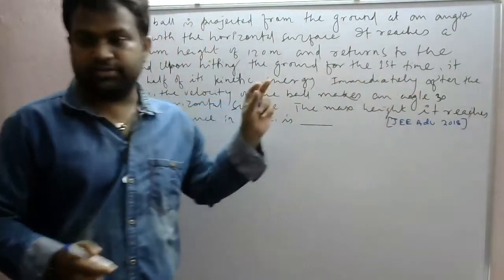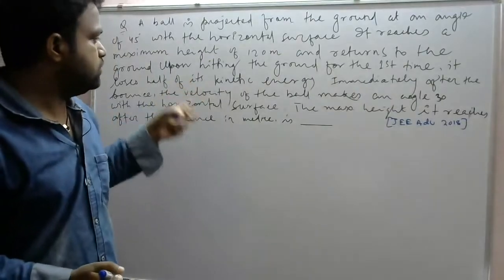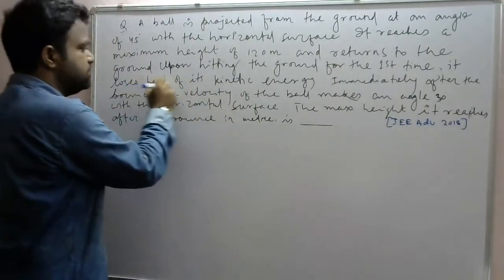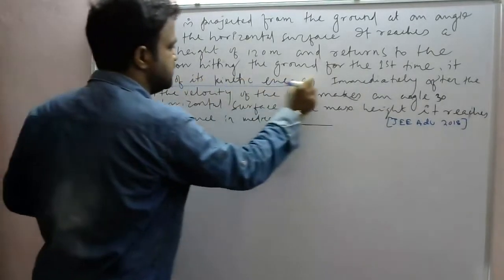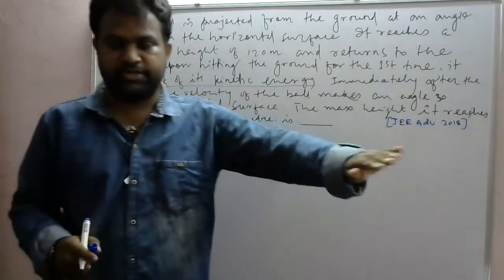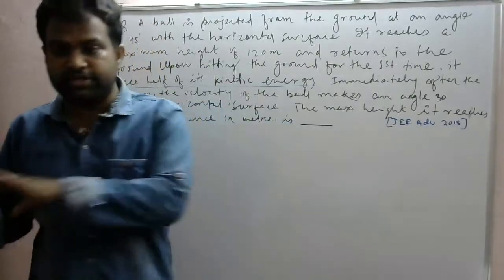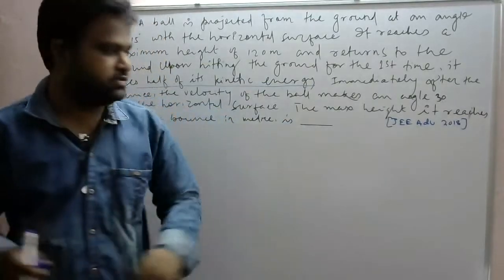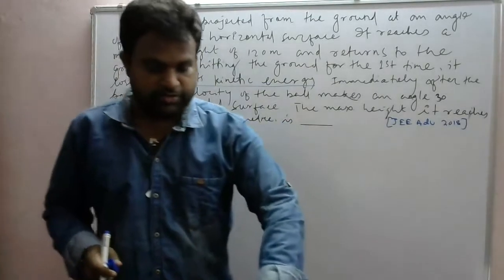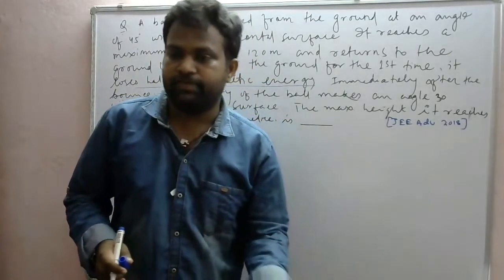When the ball bounces from the ground the second time, it loses half of its initial kinetic energy. So the final kinetic energy after the bounce is half of the initial kinetic energy, and the bounce angle is 30 degrees.